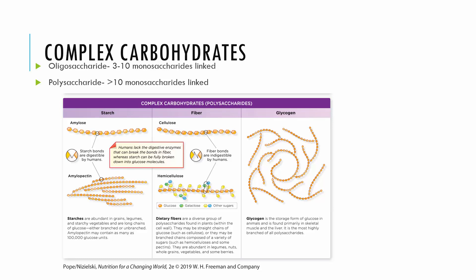Complex carbohydrates include oligosaccharides, which are three to ten monosaccharides linked, and polysaccharides, which have greater than ten to thousands of glucose molecules linked. Starch is how our plants — vegetables, grains, legumes — store their energy. We have amylose and amylopectin as two different types of starch. The important thing is these are digestible bonds that come from our plant foods.